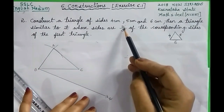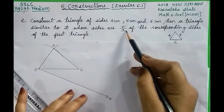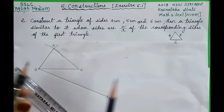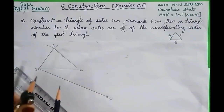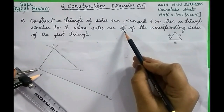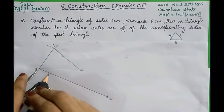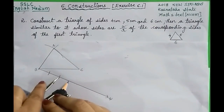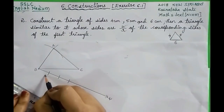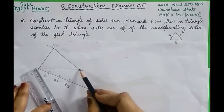Every side of the new triangle is 2/3 of this triangle. In the fraction 2/3, the numerator is 2 and the denominator is 3. The bigger number here is the denominator, that is 3. So now locate 3 equidistant points from point B — 1, 2, 3. Name these points as B1, B2, B3. Then join B3 and C.